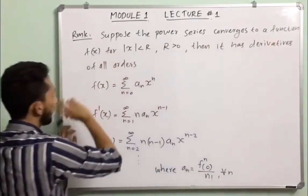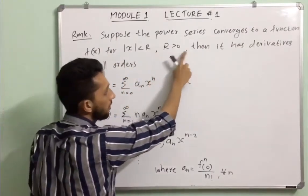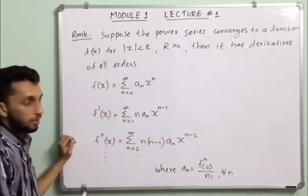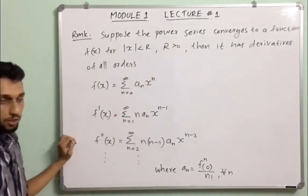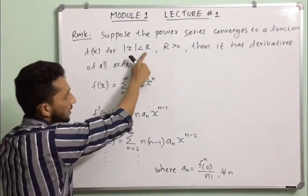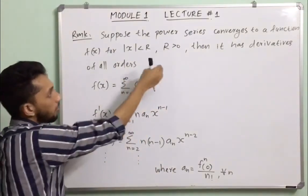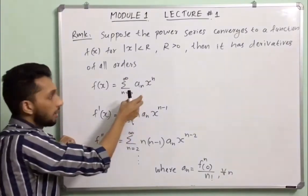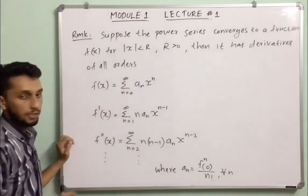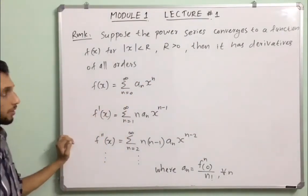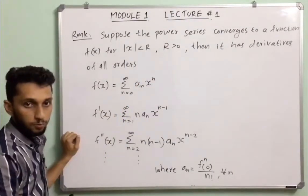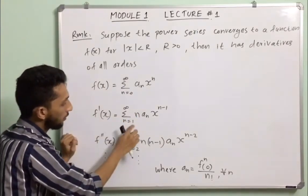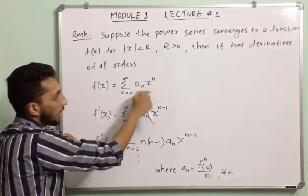Remark: Suppose the power series converges to a function f(x) for |x| < R with R > 0. Then it has derivatives of all orders. We can differentiate term by term: f′(x) equals summation n from 1 to infinity of n·aₙ·x^(n−1).